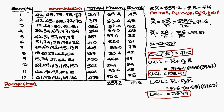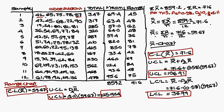For the Range chart: the control line is R-bar = 59.67. The upper control line formula is D4 times R-bar: 2.21 × 59.67 = 125.904. The lower control line is D3 times R-bar: since D3 is 0, the lower control line is 0.